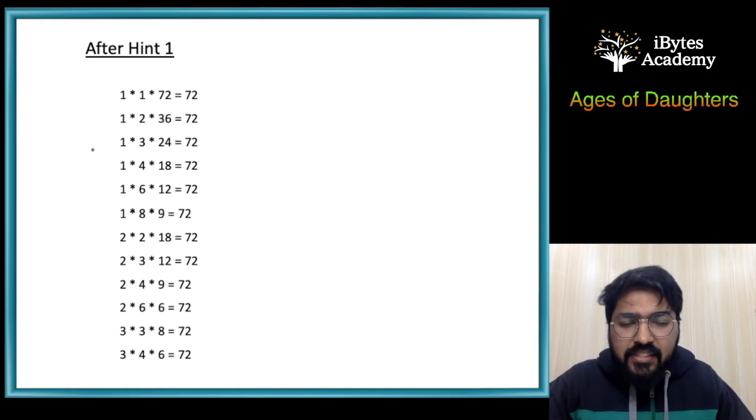There are 12 possibilities, and any of these could be the ages of his daughters. So Shyam said he doesn't have enough information yet.